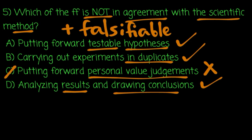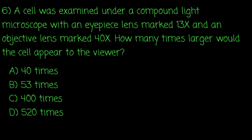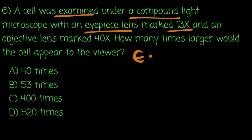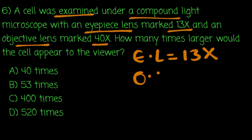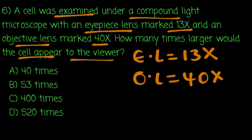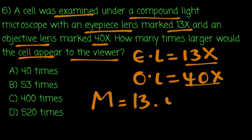A cell was examined under a compound light microscope with an eyepiece lens marked 13 times and an objective lens marked 40 times. How many times larger would the cell appear to the viewer? We need to find the total magnification.